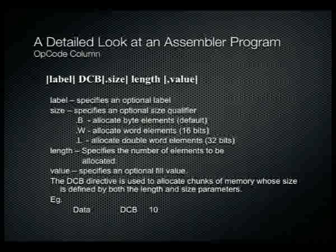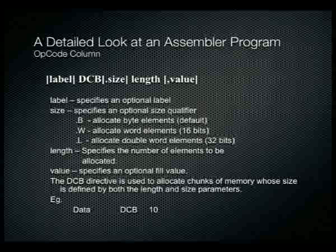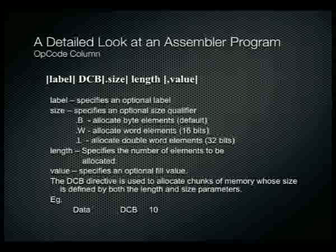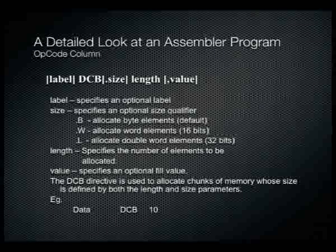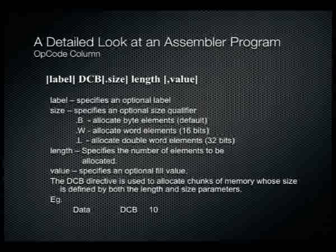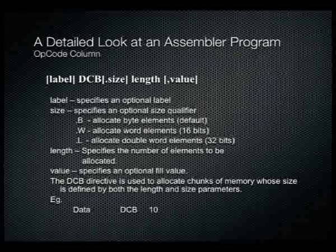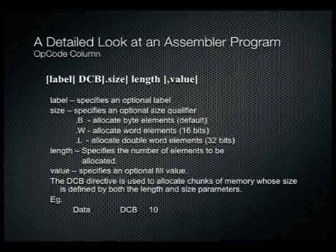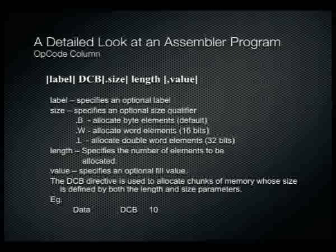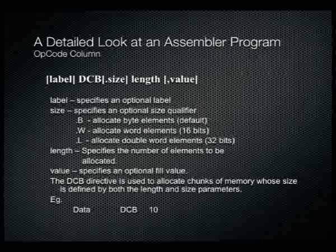A similar command is DCB, where you specify the size — byte, word, or long — and also the length and an optional fill value. For example, 'DCB.b 100, 0' allocates 100 bytes all initialized to zero. Another example: 'data DCB 10' simply allocates 10 bytes to use later, with no pre-fill value required.